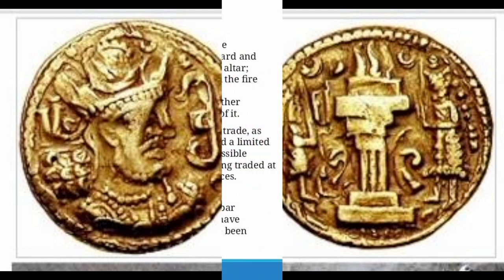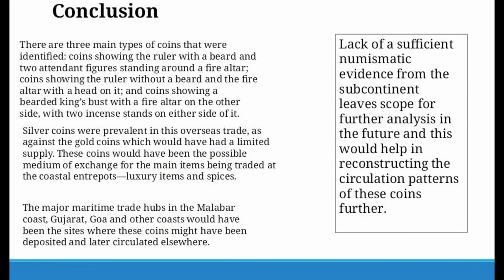Moving on to conclusions: when looking at Shapur II coins, three types were identified — one with a fire altar motif and two attendant figures; one with a human head in place of the fire; and one with two incense stands instead of attendant figures. These motifs are also found in coins of Ardashir from a previous period, and later coins of Khusro and other rulers also show these motifs — they are common across all Sasanian coinage.